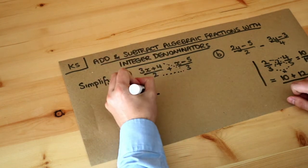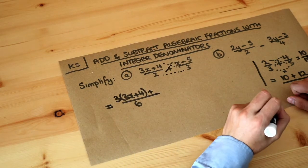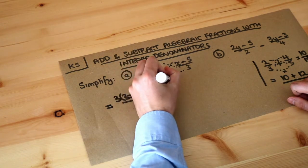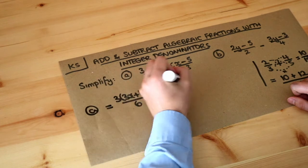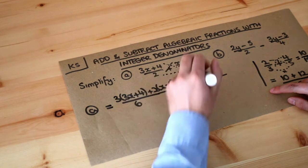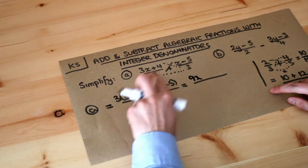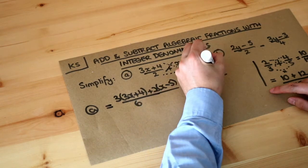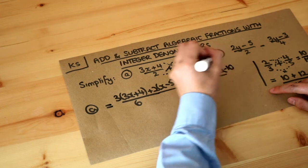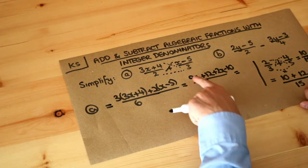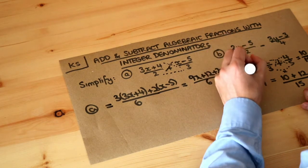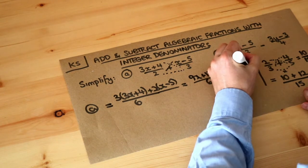And then we add, so plus, and then this multiplication diagonally as well. So two times x minus five. So if we then simplify that, so we just simplify this by expanding. We got nine x here. Three times four is twelve. Two times x is two x. Two times minus five is minus ten. And it's all over six. And that is then equal to, well, nine x plus two x is eleven x. And twelve minus ten is two. So we get eleven x plus two all over six. And that's the final answer.